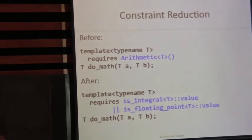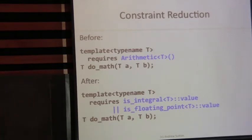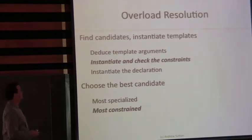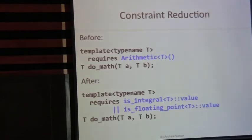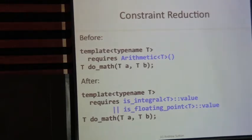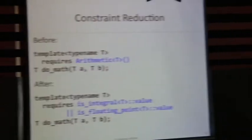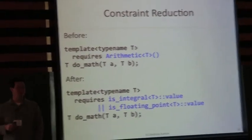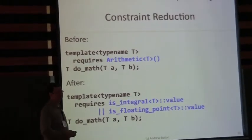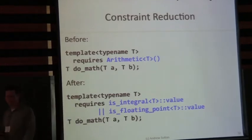All our semantics are based on this reduced form: atomic propositions connected by ands and ors. How does overloading work? We've added two steps to function overload resolution. First you perform template argument deduction — if that fails, you have a non-viable candidate. The new step is that once you've successfully deduced template arguments, you substitute those arguments into the constraints and check if they're satisfied. If this returns false, the declaration is non-viable. Unconstrained templates are always the least constrained — if you actually require true, you get something more constrained than an unconstrained template.